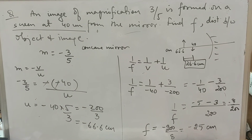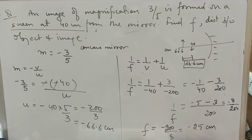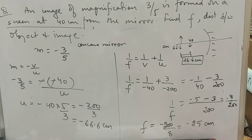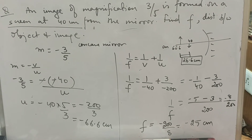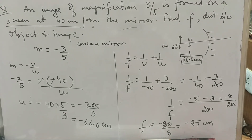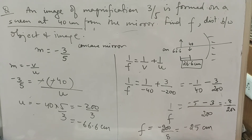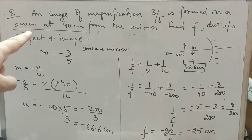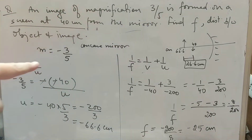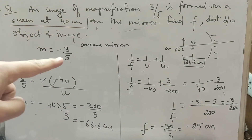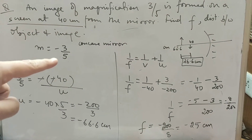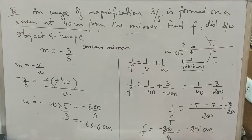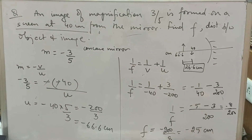Next: an image of magnification 3/5 is formed on a screen at 40 cm from the mirror. Find focal length and distance between object and image. Image formed on a screen clearly indicates it is a real image, so m = minus 3/5, and it confirms a concave mirror, so focal length will be negative.